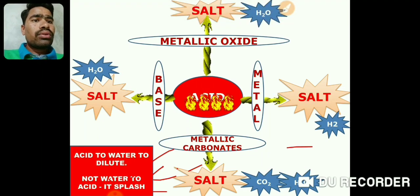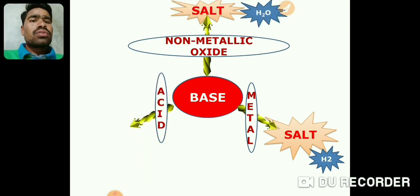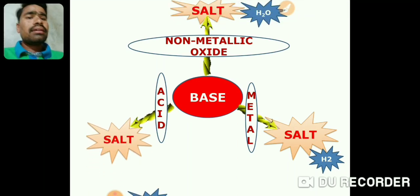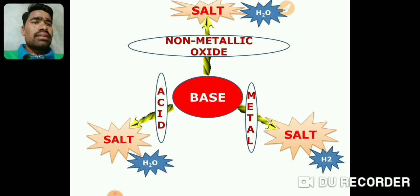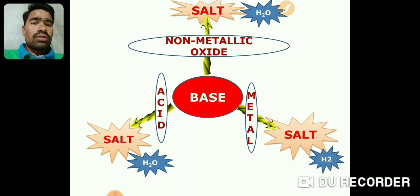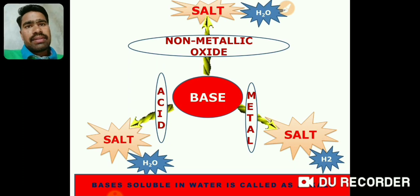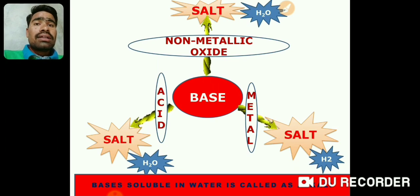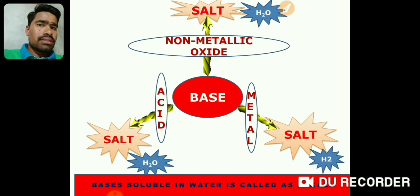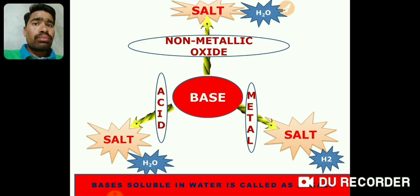Now about bases — when bases react with non-metallic oxides they form salt and water. When bases react with metals they form salt and hydrogen gas. When bases react with acid they form salt and water. Those bases which are completely soluble in water and completely dissociate in water are called alkalis — they are strong bases. Examples are NaOH, KOH, Ca(OH)2; group one and two elements form strong bases.